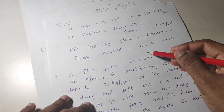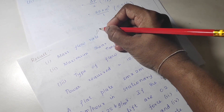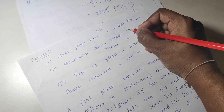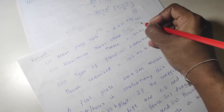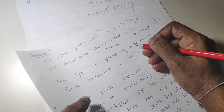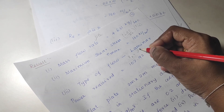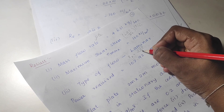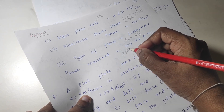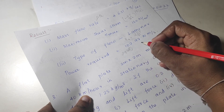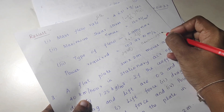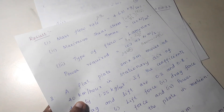Write down the results. Mass flow rate is density into Q. Maximum shear stress tau max equals dou p by dou x into r divided by 2. For the type of flow, find the Reynolds number: rho into velocity into diameter divided by mu. Power required equals rho g Q into h — if the head is not directly given, find it using p equals rho g h, then substitute into the power formula.